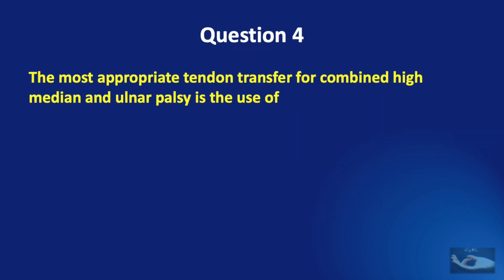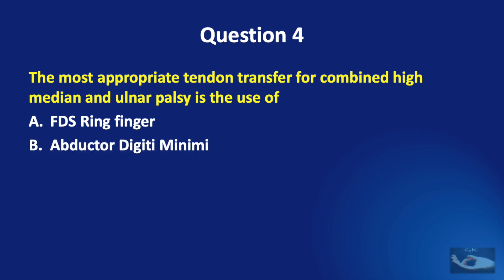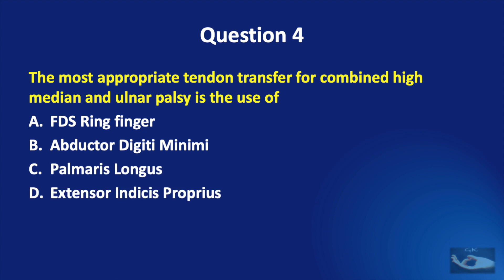Question number 4. The most appropriate tendon transfer for combined high median and ulnar palsy is: the flexor digitorum superficialis of the ring finger, the abductor digiti minimi, the palmaris longus, or the extensor indicis proprius?